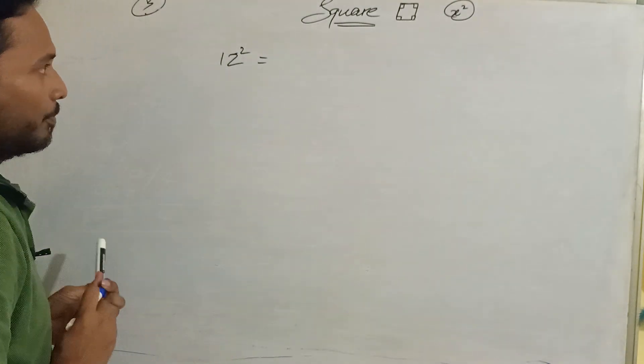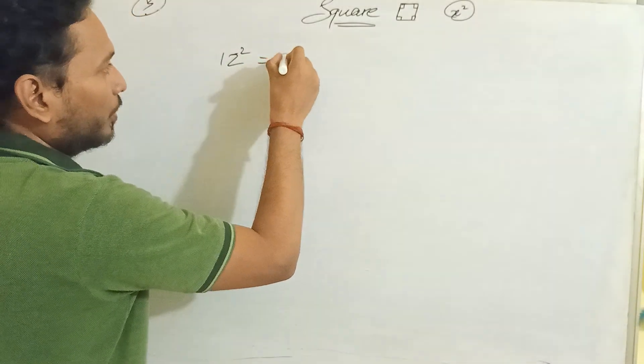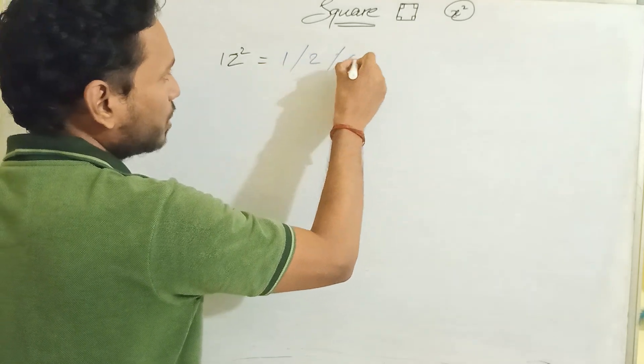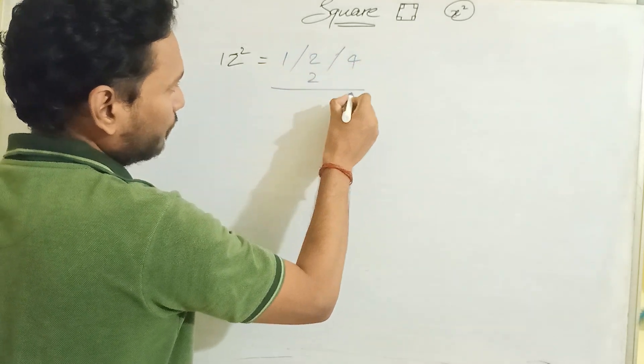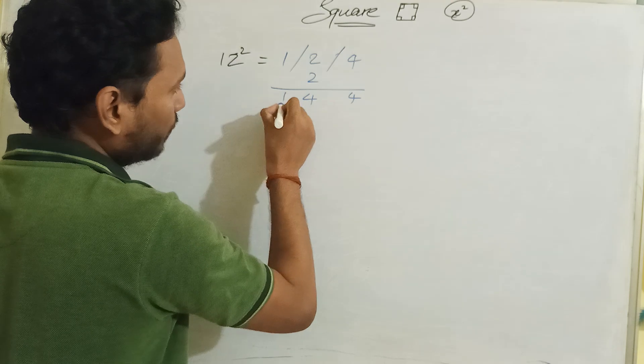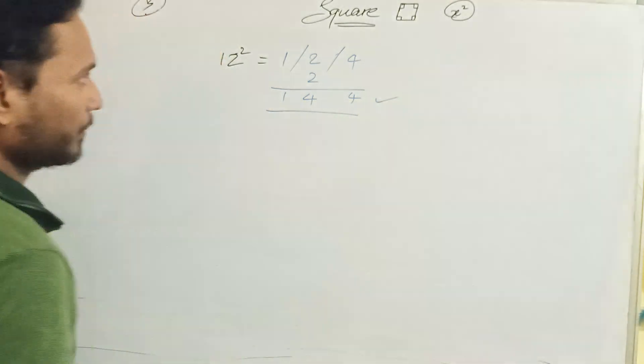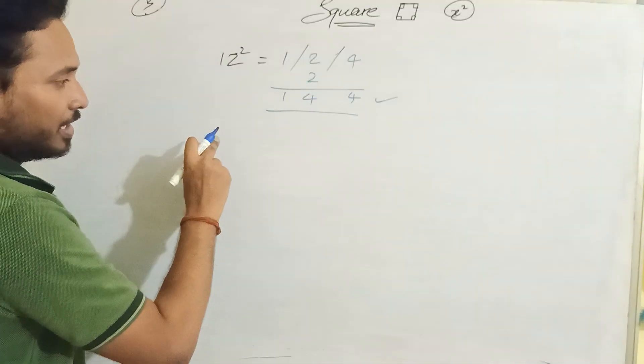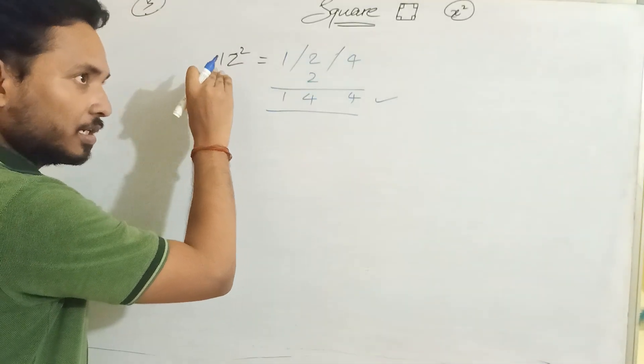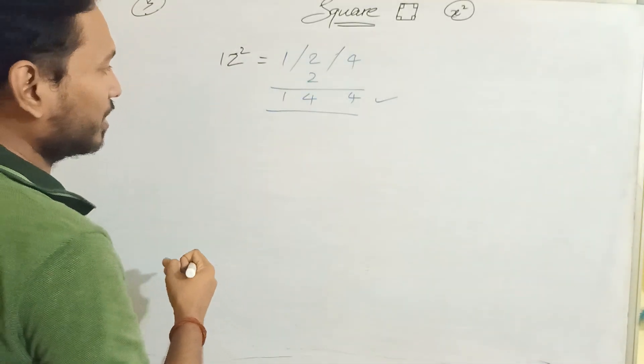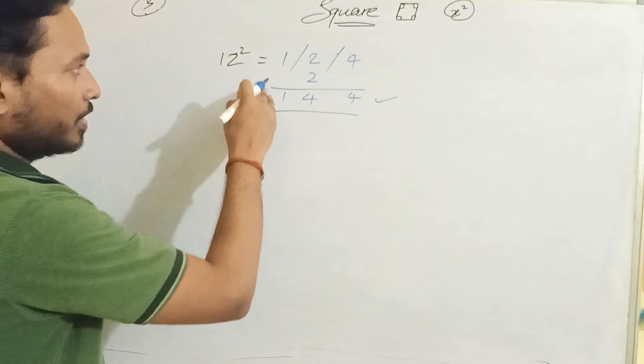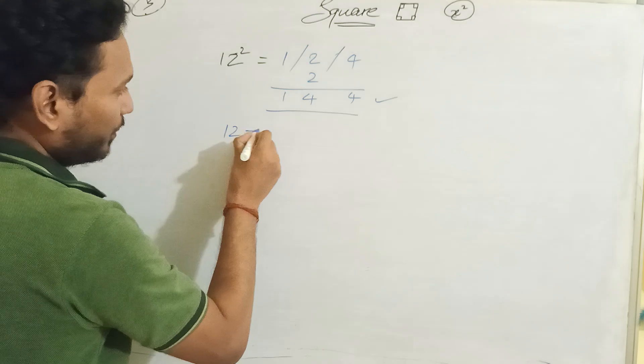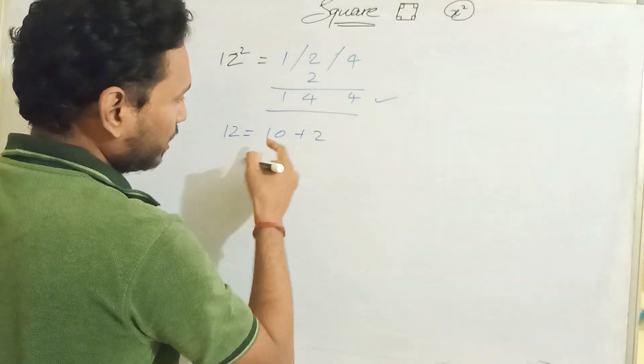From previous method: 1 2 1, 2 2 2 4, 4 2 2 4 1. This is okay. How can I solve this same problem in a new method? We will try to discuss on this point. 12 we can write as 10 plus 2.